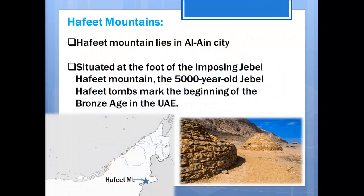Now we are looking at the first archaeological site, which is Hafeet Mountains. Hafeet Mountains lies in Al Ain city, situated at the foot of the Jabal Hafid Mountain. You know Jabal Hafid Mountain — and Jabal Jays, which is the highest mountain peak in the UAE. So this Hafeet Mountains site lies at the foot of Jabal Hafid Mountain.